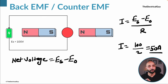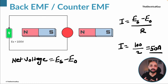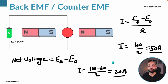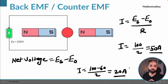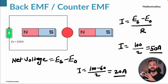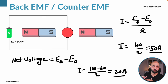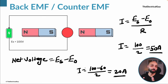Once the motor starts rotating and accelerating, the back EMF begins to build. For example, once it reaches 60 volts, the current drops to 20 amperes. As the motor reaches full-load speed, the back EMF builds slowly and the current drops to a safe operating level. This is why back EMF is of paramount importance in the case of a DC motor, and understanding this concept is very important.